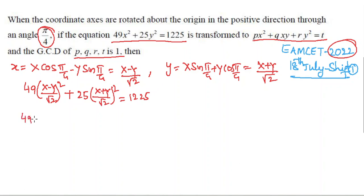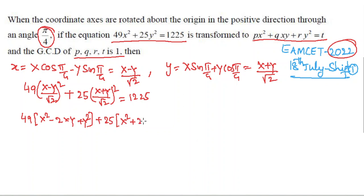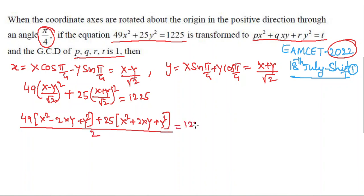Expanding: 49·(X² − 2XY + Y²)/2 + 25·(X² + 2XY + Y²)/2 = 1225. Taking LCM of 2 on the left side.